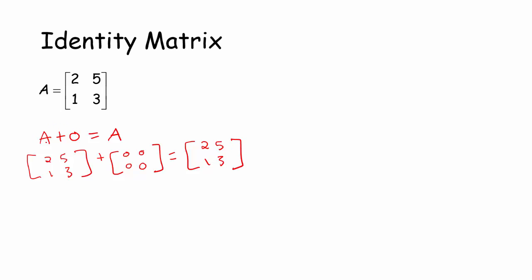When you see a matrix equation written as A plus 0 equals A, think carefully: the zero here represents a matrix of all zeros, and it has to be the same size as matrix A for the addition to even make sense. Additive identities are pretty easy to think about, but multiplicative identities are trickier.